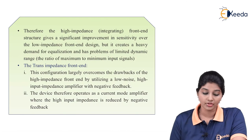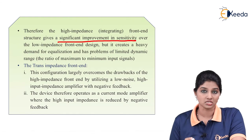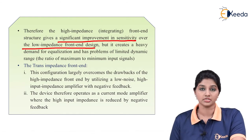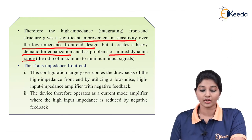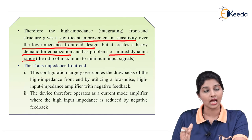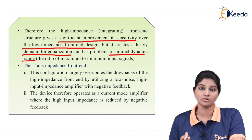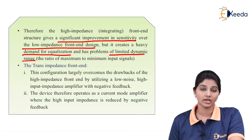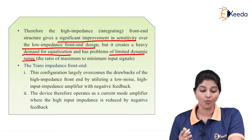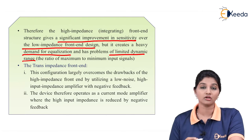The high impedance front end structure gives a significant improvement in sensitivity over a low impedance front end design, but the major problem is that it creates a heavy demand for equalization and has a problem of limited dynamic range. The limited dynamic range is defined as the ratio of the maximum input signal to the minimum input signal. These are the disadvantages of the high impedance front end amplifier — it requires equalization and provides a limited dynamic range.